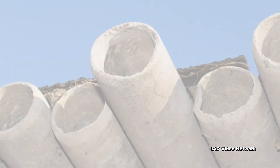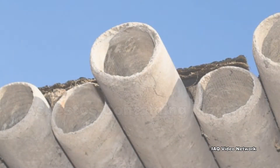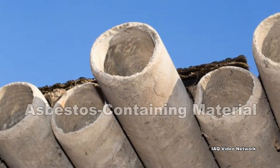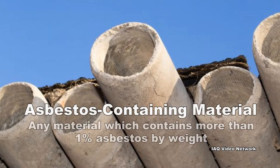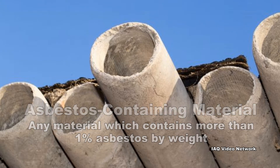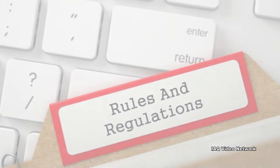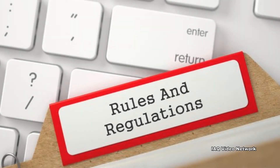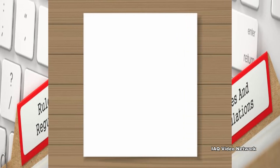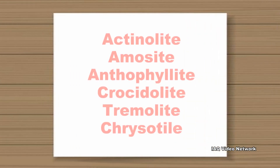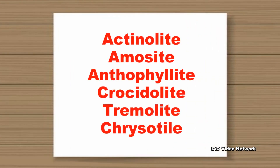In the United States, the term asbestos-containing material means any material which contains more than 1% asbestos by weight. Regulatory agencies such as the Environmental Protection Agency and the Occupational Safety and Health Administration recognize six asbestos and asbestiform minerals.